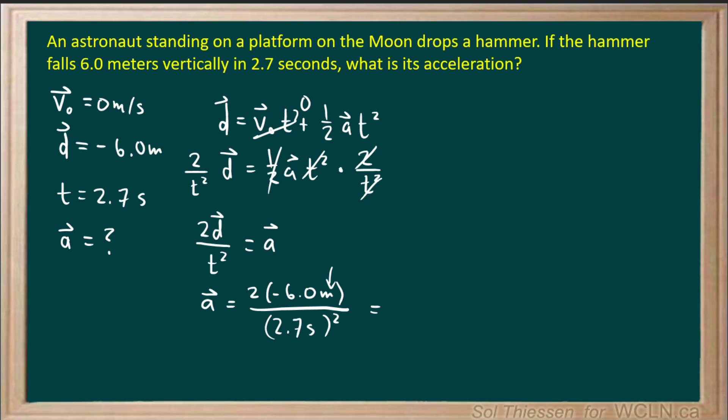Now if you evaluate this using your calculator, 2 times negative 6 divided by 2.7 squared, if you round that to two significant figures, which we should have here since we're only performing multiplication and division, and this 2 can be considered exact, we'll end up with a final answer of negative 1.6 meters per second squared.